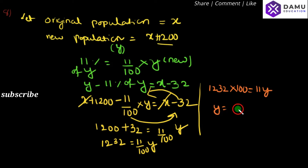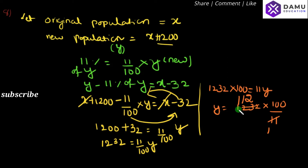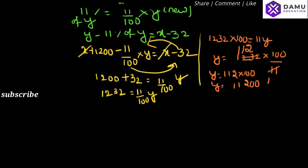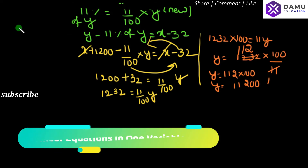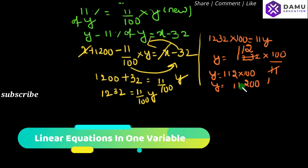Then 1232 into 100 equals 11Y, so Y equals 1232 times 100 divided by 11. Calculating that gives Y equals 11200. So the new population is 11200.